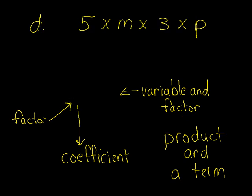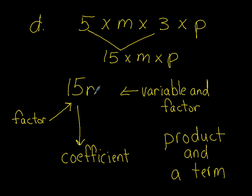On to letter D. This time we'll group going across here. 5 and 3, we have 15 times M times P. So our new term is 15MP. Same things as before: factor, coefficient, variables, product, and term.